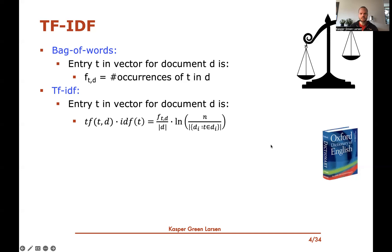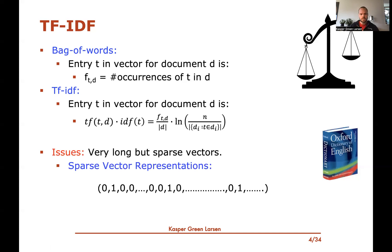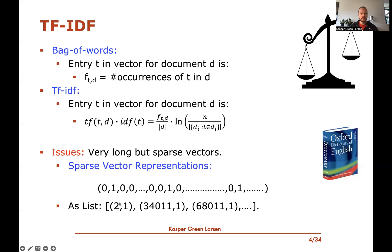The issues with these two representations are that they produce very long vectors — proportional to the size of the English dictionary. To deal with this, we use sparse vector representations, storing only non-zero entries as pairs: the index into the vector and the count. For example, position two is one, position 34,011 is one, stored in sorted order.